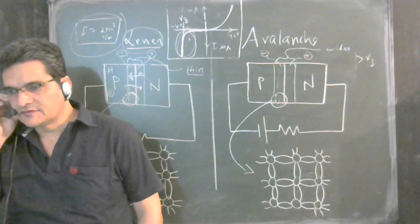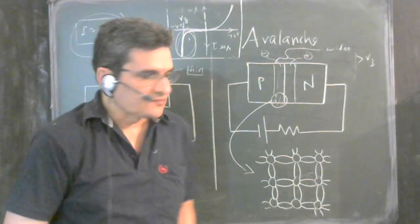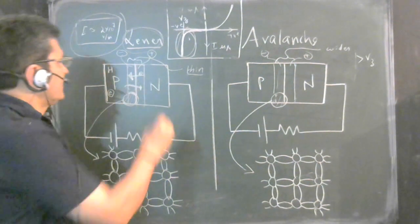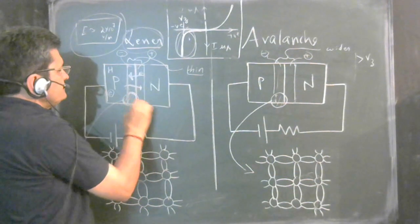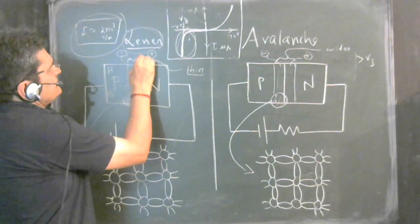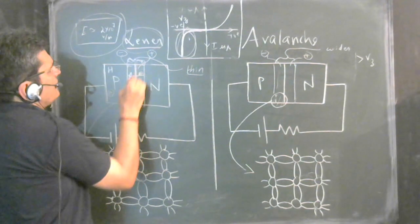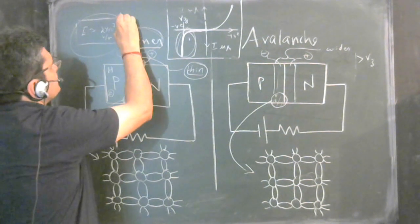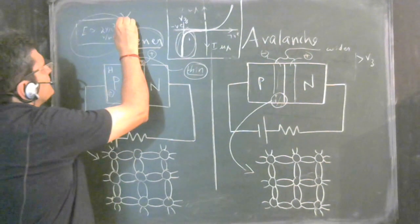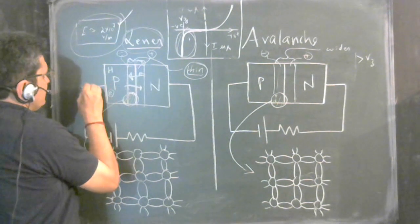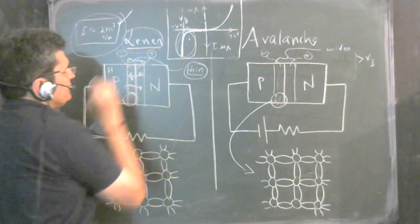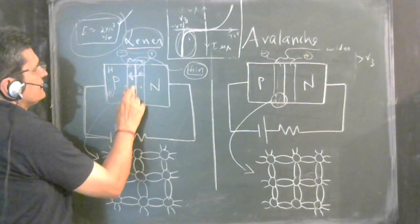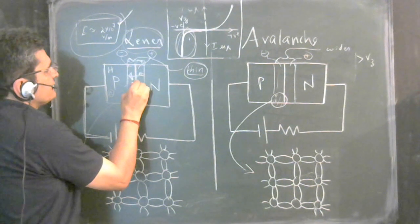In this lecture we will cover the Zener diode and focus on the Zener breakdown and the avalanche breakdown. The Zener diode is a heavily doped PN junction, and the depletion region formed at the junction boundary is very thin, because of which there is a very high electric field, which is further increased when we apply the reverse bias voltage.